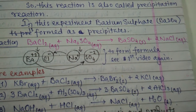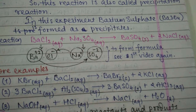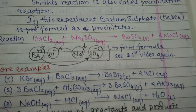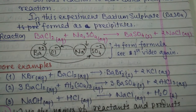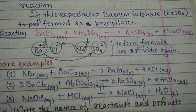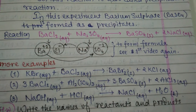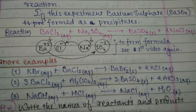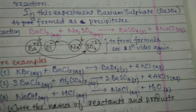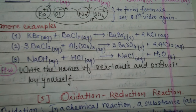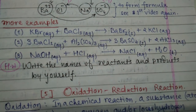The reaction is: BaCl2 + Na2SO4 → BaSO4 + 2NaCl. BaCl2 is composed of Ba²⁺ and Cl⁻ ions, and Na2SO4 is composed of Na⁺ and SO4²⁻ ions. The positive ion of the first compound reacts with the negative ion of the second compound, and vice versa. These ions are exchanged and new substances are formed — this is called the double displacement reaction.